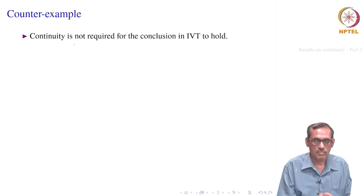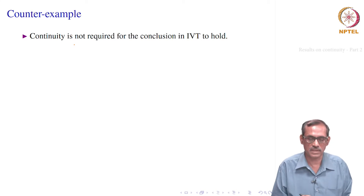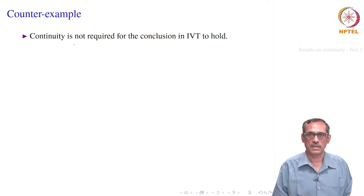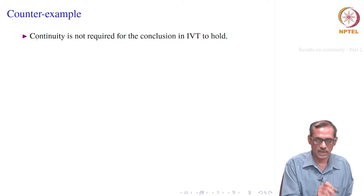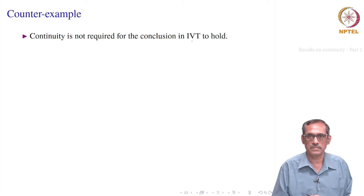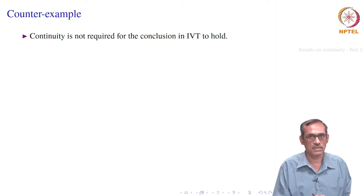This is the Intermediate Value Theorem. What it says is that the Intermediate Value Theorem may not hold true — that means the conclusion of it is not true — if you do not have a continuous function. But continuity is not really required for the conclusion in IVT to hold. We will see both these points.